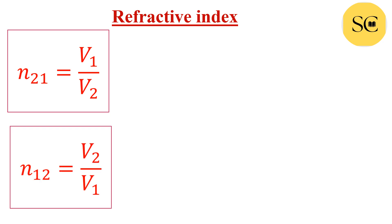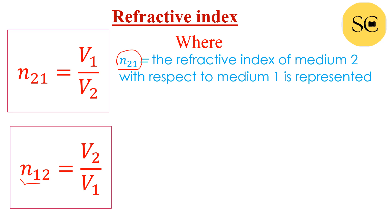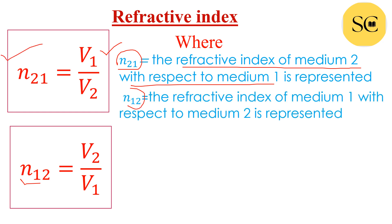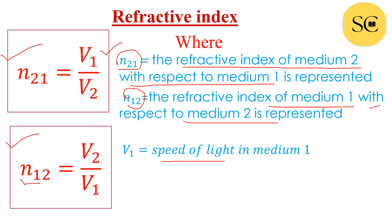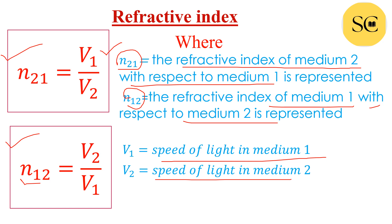Refractive index — we have two formulas: N21 = V1/V2 and N12 = V2/V1. N21 is the refractive index of medium 2 with respect to medium 1, so we use this formula. N12 is the refractive index of medium 1 with respect to medium 2, and we use this formula. V1 is speed of light in medium 1 and V2 is speed of light in medium 2.